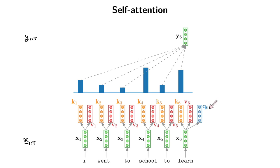Each of those values tells us intuitively how similar the query is to that particular key. But we want them to all be between 0 and 1 and sum to 1. So we take that vector of A's and push it through a softmax layer, and then we get values all between 0 and 1 that sum to 1 — essentially a distribution over our input vectors. Then we take the weight associated with each position and multiply it with the value at that position, and add them all up. That gives us a weighted sum of our value vectors based on how similar each key was to the query, and that gives us the sixth output.